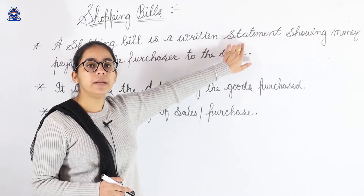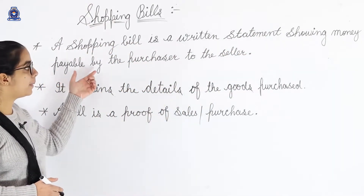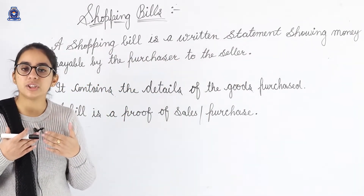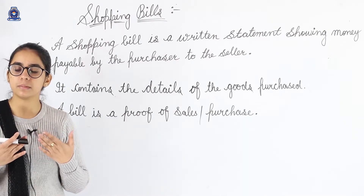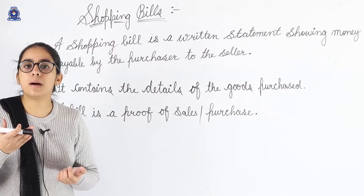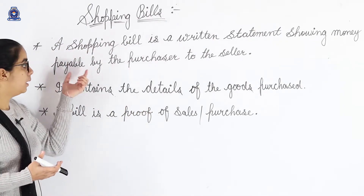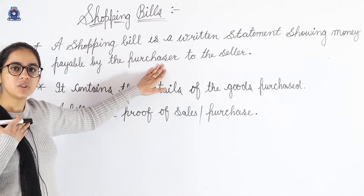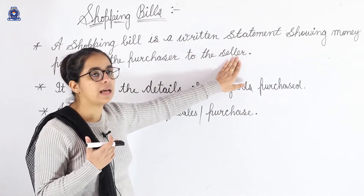A bill is a return statement showing money payable by the purchaser. Money payable means ki purchaser — hum ne purchase kiya hai — us ne kitna money pay kiya hai? Money payable by the purchaser to the seller. Purchaser kaun hai? Agar hum purchase kar rahe hai, toh hum purchaser hai — to the seller.